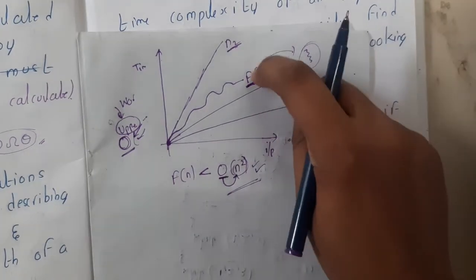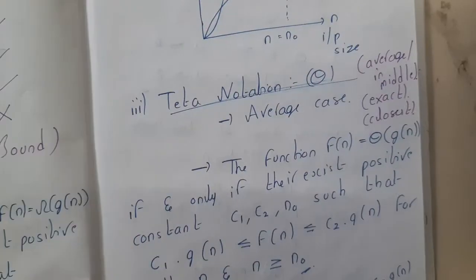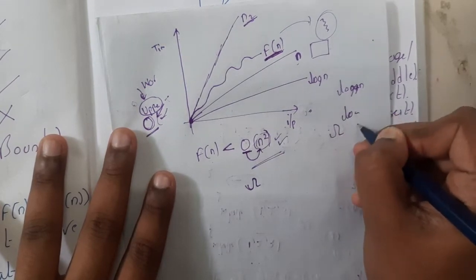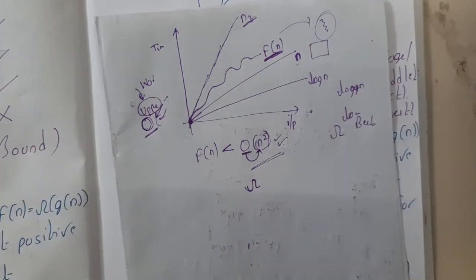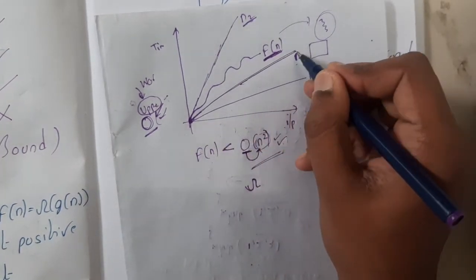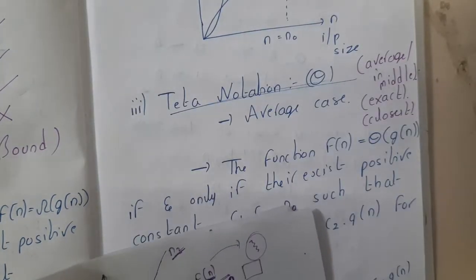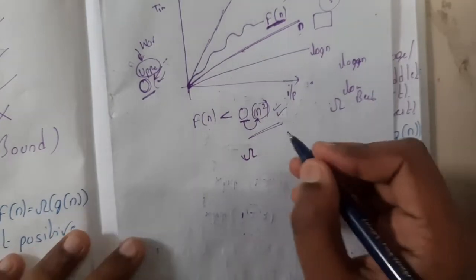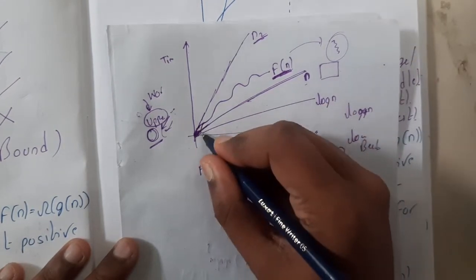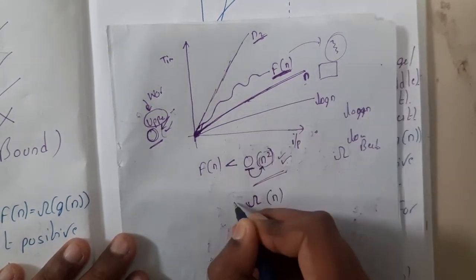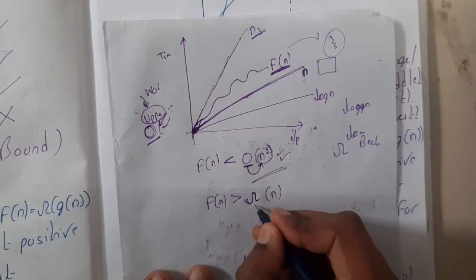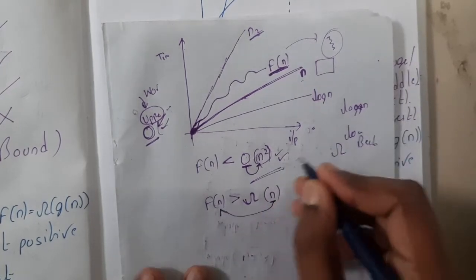Big O checks the upper/above cases. Similarly, the second type is Omega notation. Omega is the lower bound — it says the best case, the minimum value. So f(n) is above the reference function, meaning the reference (like n) is below f(n). Omega indicates the minimum value.